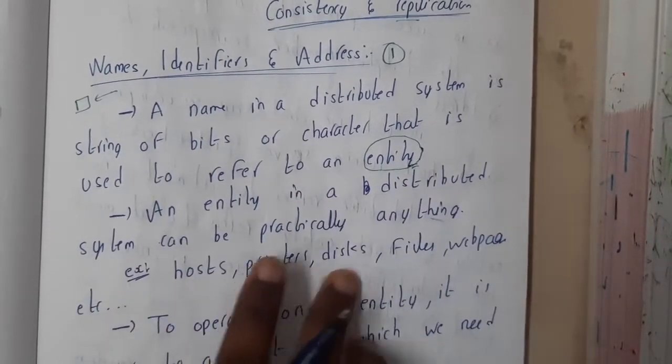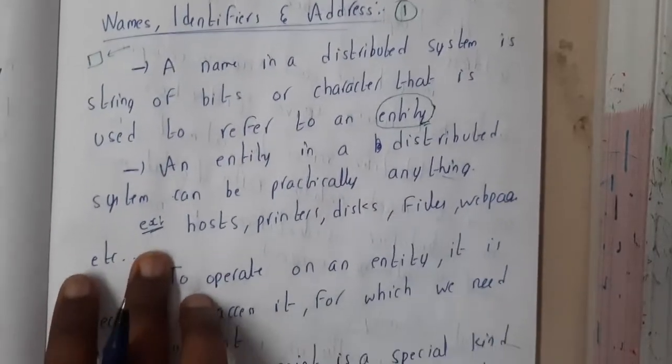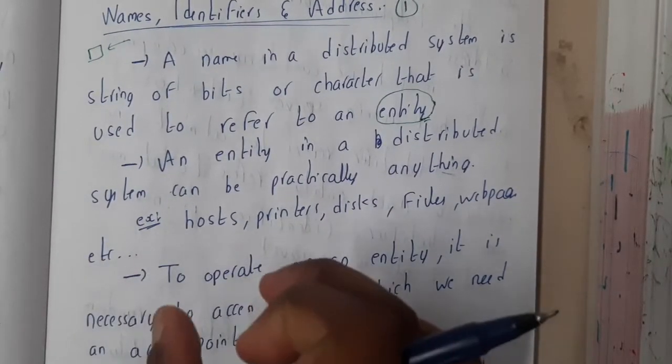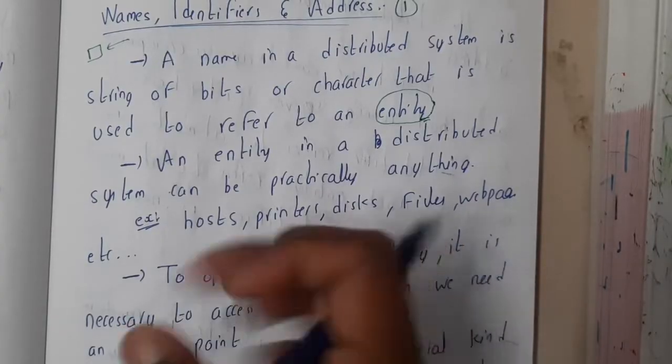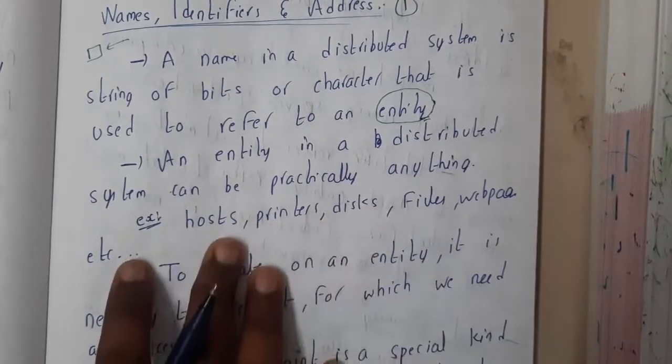Like hosts, printers, disks, files, web pages, etc. Okay, so name is a thing which is given to an entity, and entity is nothing but anything. It could be a host, IP address, or anything it could be.